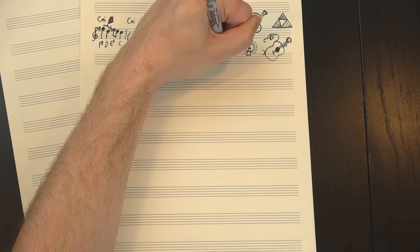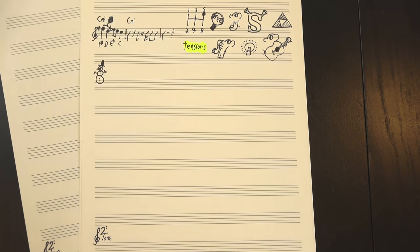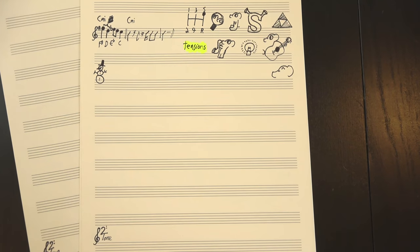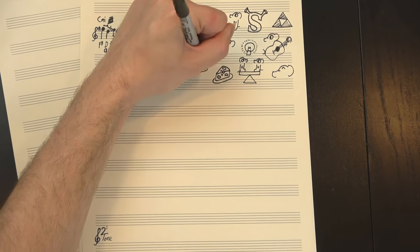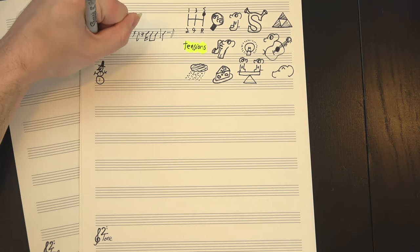Fortunately, jazz theorists have us covered. They're what's called tensions, which are notes that aren't chord tones but that sound good over it anyway. In this case, D is a major 9th, which is a stable but pretty mature sound, especially over a minor chord, while the F-sharp is the sharp 11.